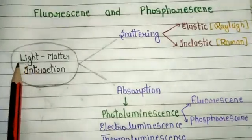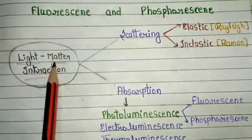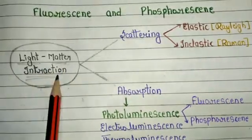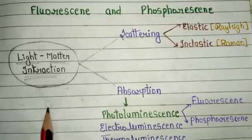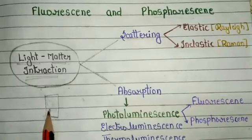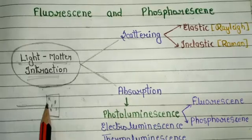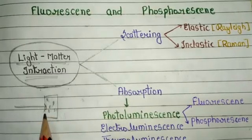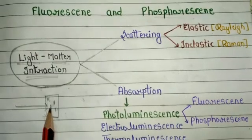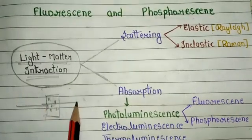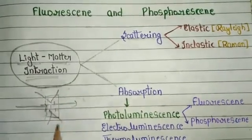The first point is light-matter interaction. When we use electromagnetic radiations and matter — our sample — interact, three kinds of phenomena happen. When electromagnetic radiations or light strike on a sample: first, some amount of light is absorbed by the sample; second, some amount of light is transmitted through the sample; and some amount of light is scattered in different angles.